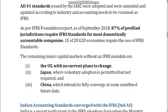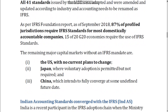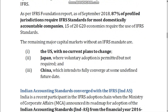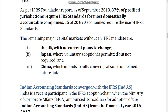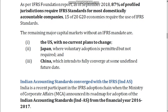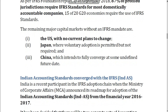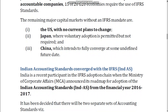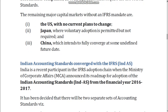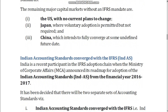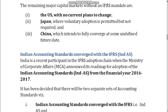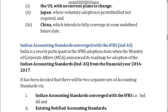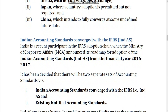As per the IFRS Foundation report, as of September 2018, 87% of profiled jurisdictions require IFRS standards for most domestically accountable companies, and 15 of 20 G20 economies require the use of IFRS standards. The remaining major capital markets without an IFRS mandate are: 1. the US, with no current plans to change; 2. Japan, where voluntary adoption is permitted but not required; and 3. China, which intends to fully converge at some undefined future date.